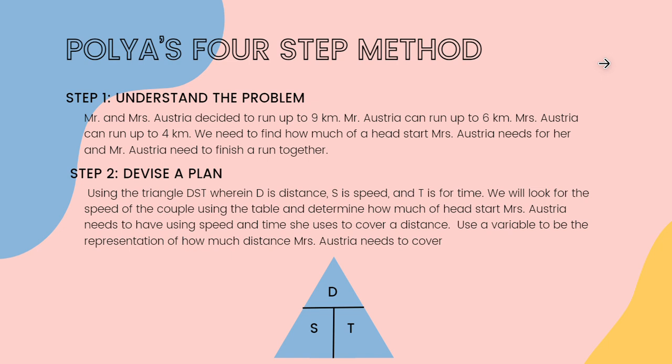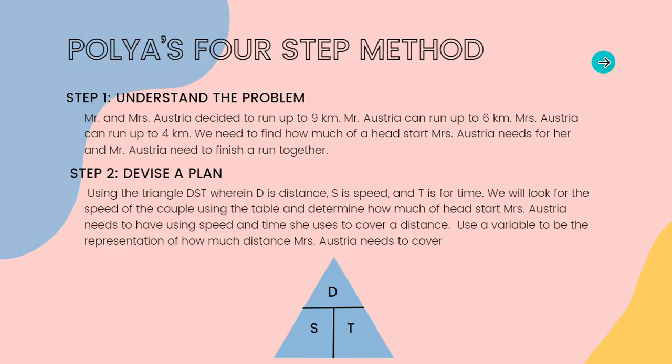Now that we understand the main problem, let us devise a plan, which is the second step of the four-step method. Let x be the number of kilometers of head start that Mrs. Austria needs. Let us also use this equation, which is derived from the problem and the given variables: x plus four times time equals nine. We will also utilize the distance over speed formula.